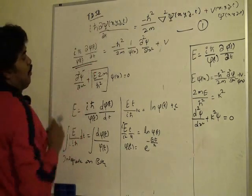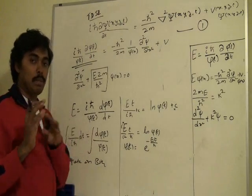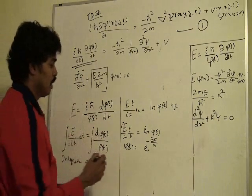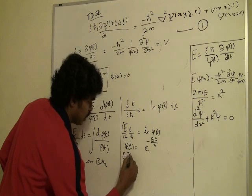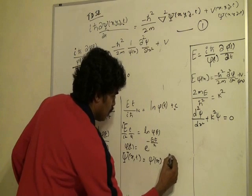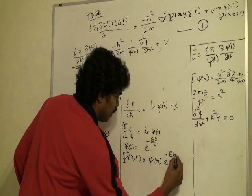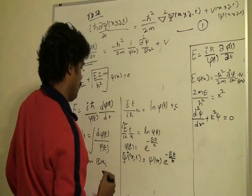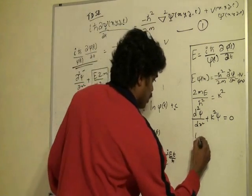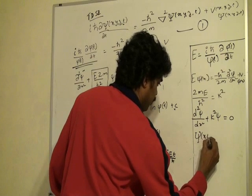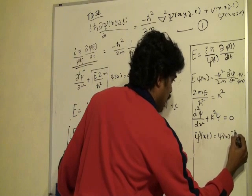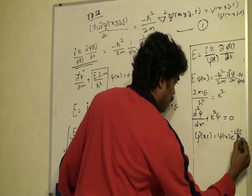So when we took this big Ψ function and put it into the two equations, the ψ(x) and φ(t), that equation can be written as capital Ψ(x,t) is equal to small ψ(x) times e to the power -iEt by h bar.